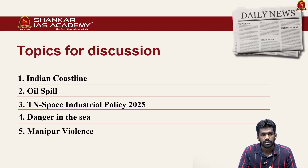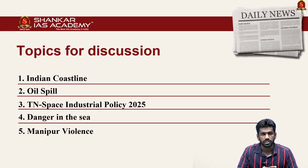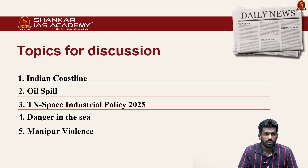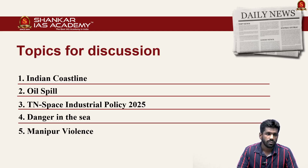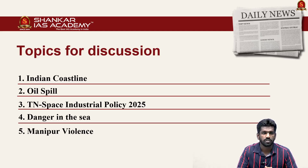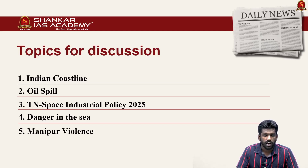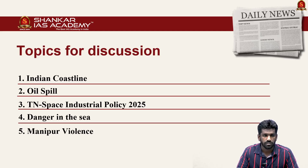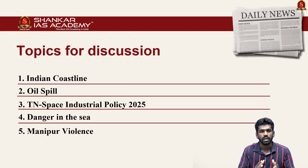The first topic is about the increase in Indian coastline — the coastline length was increased recently and we will discuss the reason. The second article is about the recent oil spill on the Kerala coast. The third is about the Tamil Nadu Space Industrial Policy. The fourth is about India's maritime disaster preparedness in light of a recent shipwreck on the Kerala coast. The fifth article is about the Manipur violence and why peace has not yet been achieved.